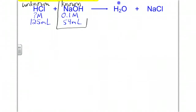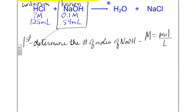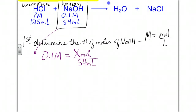Step one: we're going to start with our known concentration and determine the number of moles of sodium hydroxide using molarity equals moles over liters. We'll use milliliters throughout the problem because the units will cancel out. So 0.1 molar times 54 milliliters gives us 5.4 millimoles of sodium hydroxide.